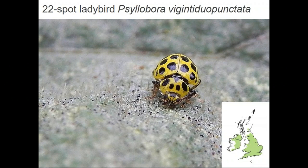The 22-spot ladybird is a bright lemon-yellow colour — one of my favourite ladybirds. It's a little bigger than the 16-spot but still fairly small, and feeds on mildew. You'll often find it low down on vegetation — things like hogweed and young oak leaves with mildews on them. If you look on the underside of a hogweed leaf with lots of mildew, you can quite often see this lovely little ladybird or its larvae. It normally has 22 spots, though sometimes 20.